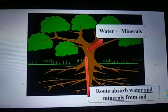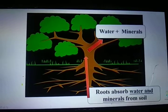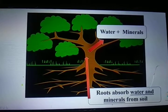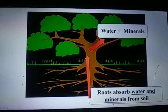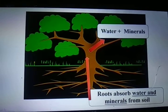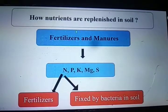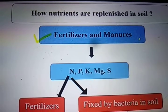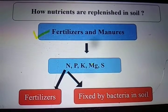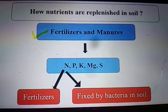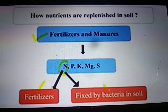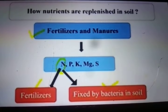Roots absorb water and minerals from soil for photosynthesis, but how are these nutrients replenished in the soil? If plants continuously take up nutrients, eventually all nutrients will be lost. Nutrients are replenished by the addition of fertilizers and manures, which provide essential elements like nitrogen, phosphorus, potassium, magnesium and sulfur. Nitrogen, required by plants in large quantities, is added by fertilizers and is also fixed by bacteria in the soil.